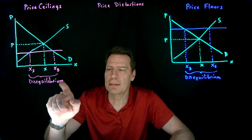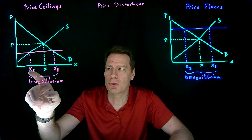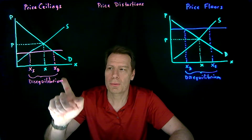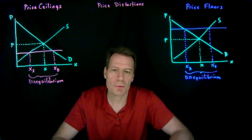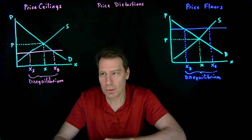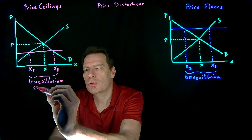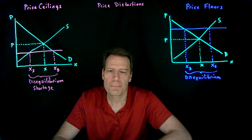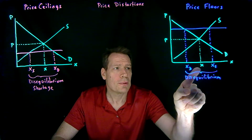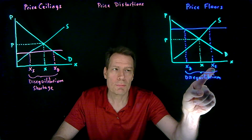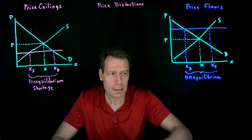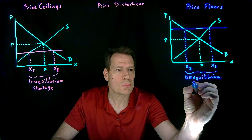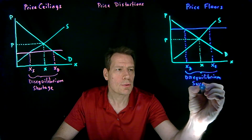In the price ceiling case, the quantity demanded is larger than the quantity supplied, which means there is a shortage — consumers want to buy more than what producers produce. So this is a disequilibrium shortage. On the price floor side, producers are producing more than what consumers want, so that's a surplus — there's too much being produced. So this is a disequilibrium surplus.